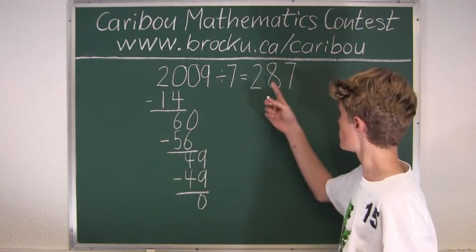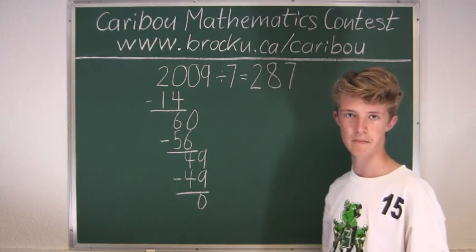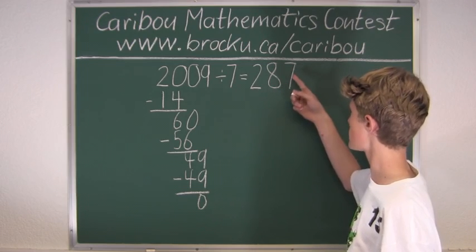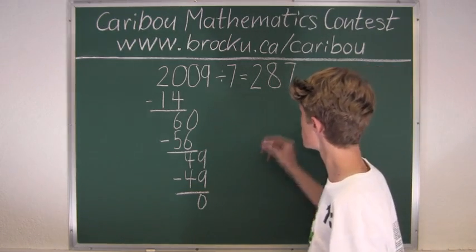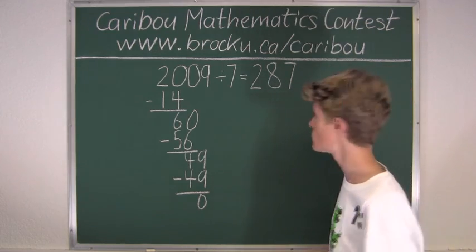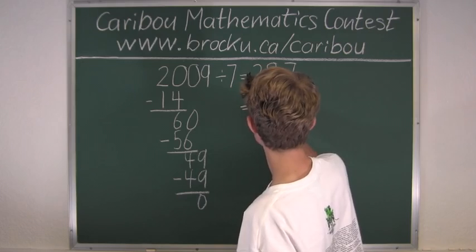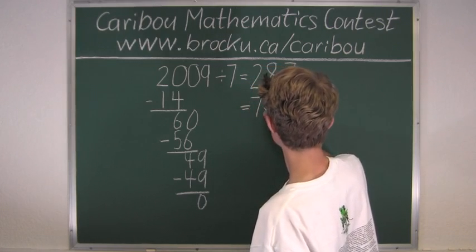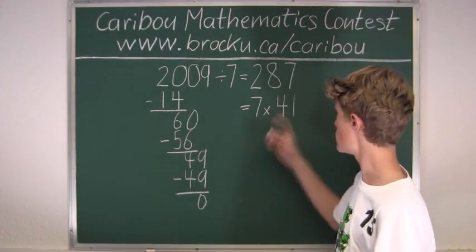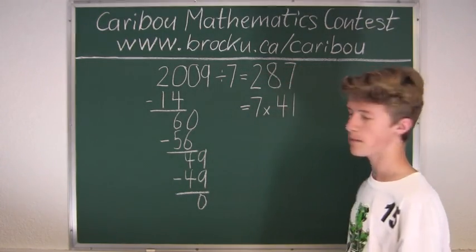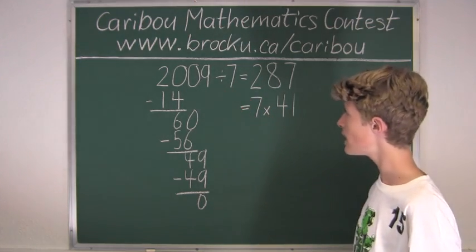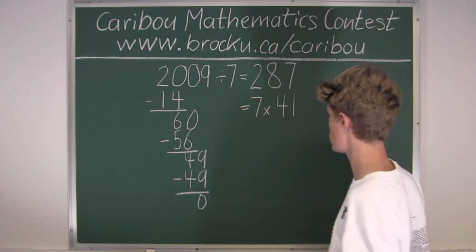So now we will have to see if 287 is divisible by 7. So 28 divided by 7 is 4 and 7 divided by 7 is 1. So we know that 287 is equal to 7 times 41. So now we know 41 is a prime number, so we know the prime factorization of 2009 is 7 times 7 times 41.